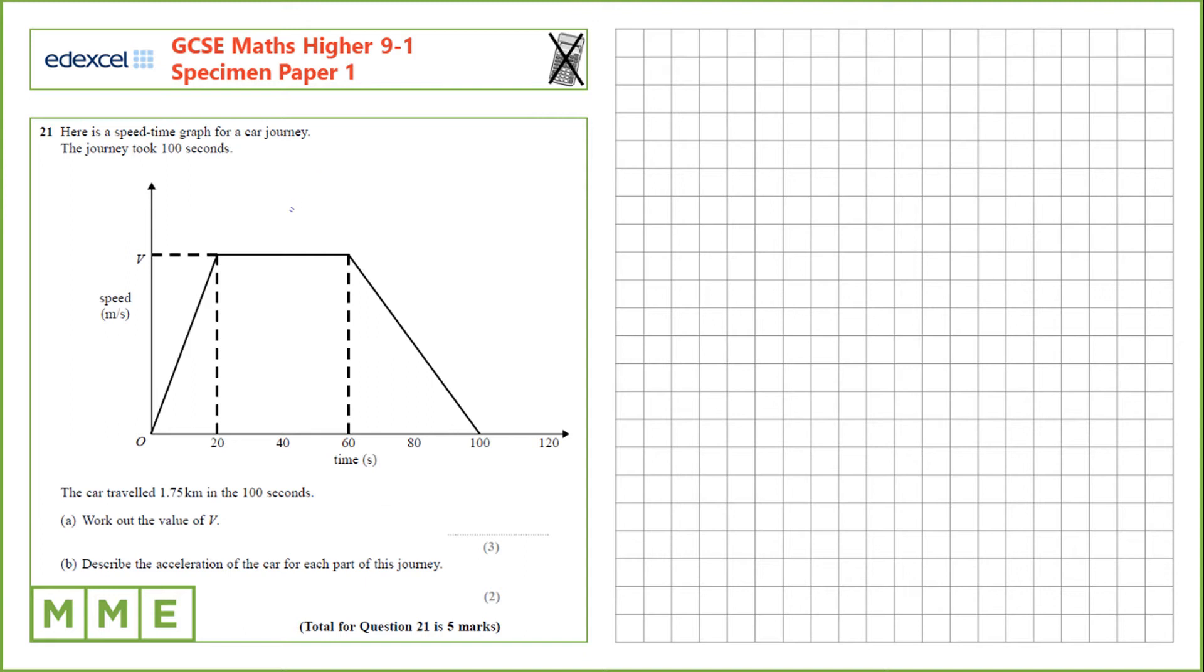Question 21. Here is a speed time graph for a car journey. The journey took 100 seconds. The car travelled 1.75km in the 100 seconds and we need to work out the value.